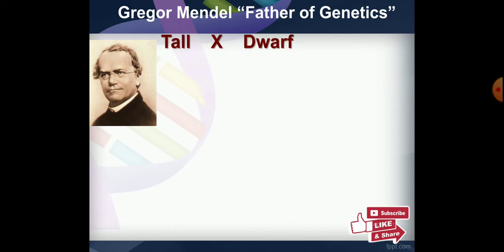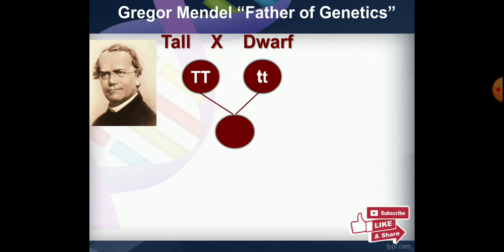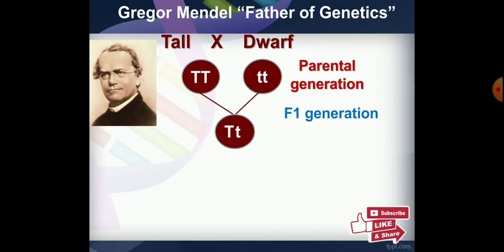In the parental generation, we cross a homozygous tall (TT) with a homozygous dwarf (tt). The homozygous tall is represented by capital T capital T, and the homozygous dwarf is represented by small t small t. The gametes formed are capital T and small t, giving an F1 generation of capital T small t.